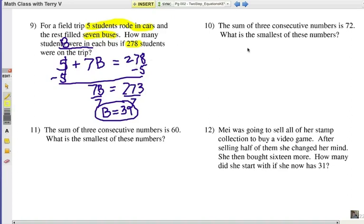Let's look at number ten. The sum of three consecutive numbers is 72. What's the smallest of these numbers? You'll see the word consecutive in a lot of word problems in math. Consecutive means numbers that are right in a row like 4, 5, and 6 or 11, 12, and 13. And of course, the sum is we're going to be adding these up.